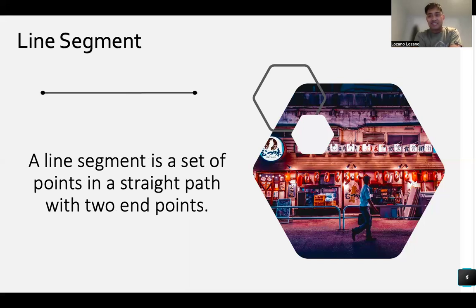Next, we have a line segment. A line segment is a set of points in a straight path with two endpoints. So ito naman, ending ito. So natatapos ito. So it will give the exact point from the start to beginning. So kanina, unending, that is a line. Pero kapag nalagyan na siya ng mga exact points, yung two endpoints, we called it line segment. So this is the line segment. Kapag may dalawa kayong tuldok na nakita sa magkabilang dulo, that is line segment.